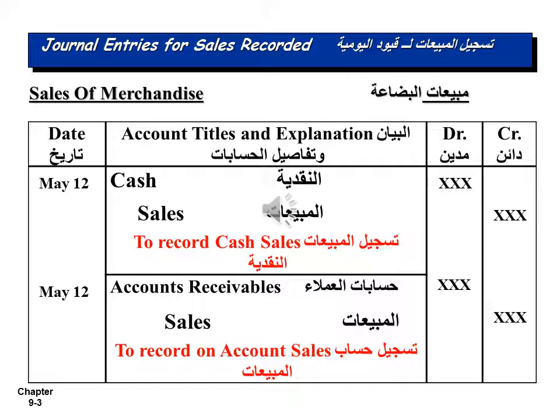The second entry is required to record sales on account. The debit: Accounts Receivable; credit: Sales. Description: to record on-account sales.